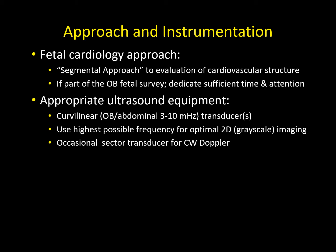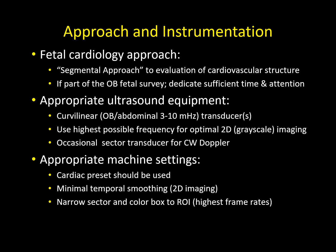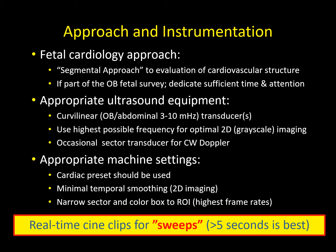Start with the highest possible frequency and dial it back if necessary — this gives optimal two-dimensional grayscale imaging. Occasionally use a sector probe for continuous-wave Doppler; some vendors allow their curved probes to have CW Doppler. Create a cardiac preset with minimal temporal smoothing, and make sure the sector is narrow and the color box region of interest is narrow so you have the highest frame rates when imaging the fetal heart. Real-time cine clips are important specifically for sweeps — more than five seconds is best, typically five to seven seconds.